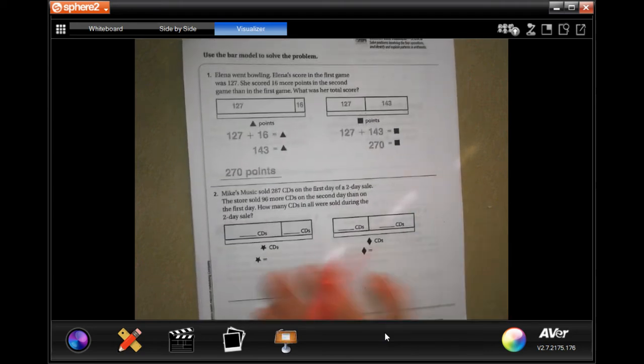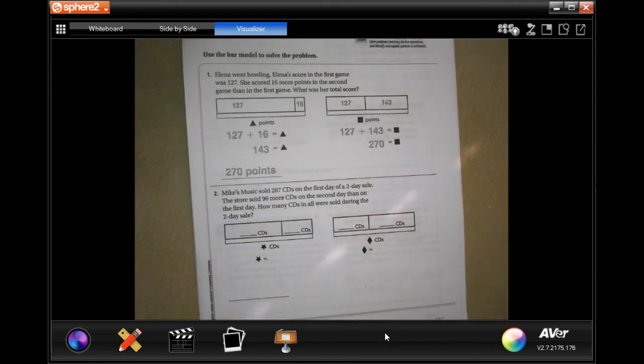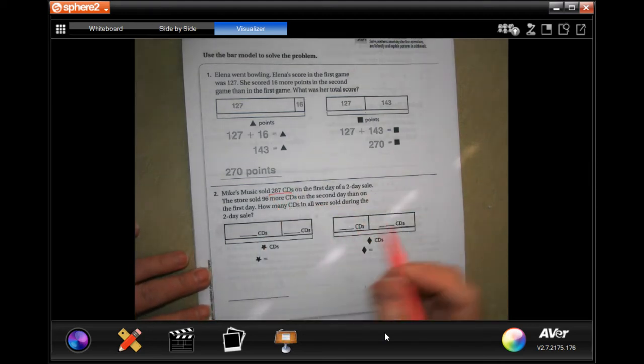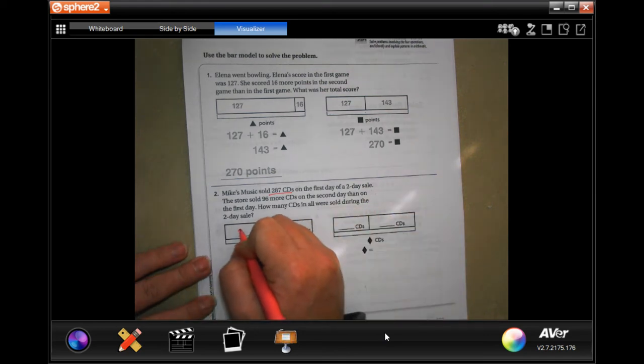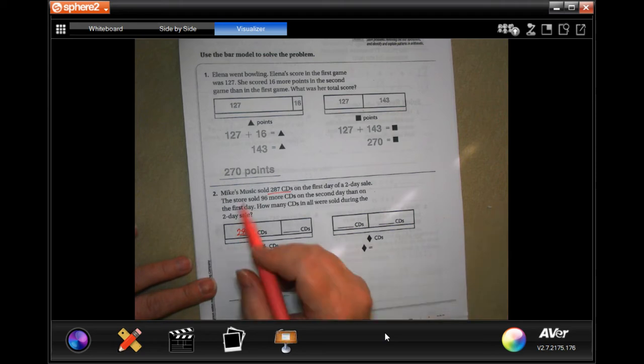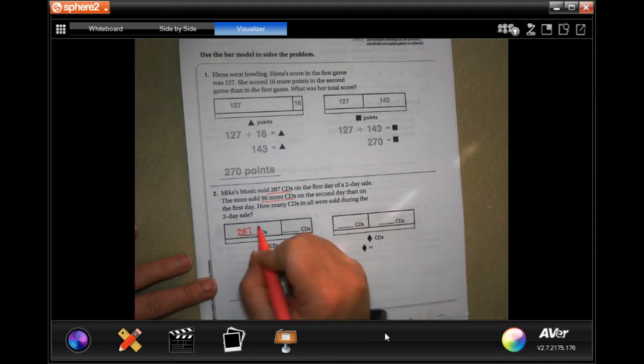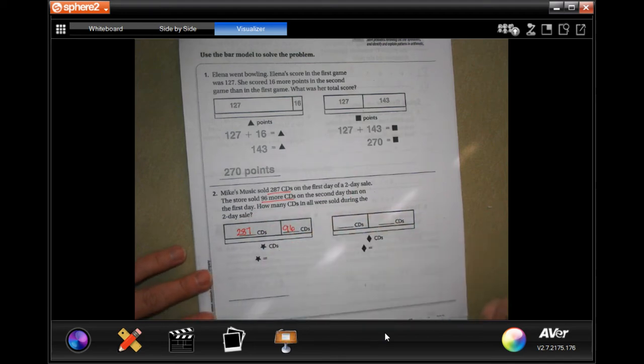Number 2 is a two-part problem. Nice Music sold 287 CDs on the first day of a two-day sale. So, 287 is going to be our first number. The store sold 96 more CDs on the second day than on the first. So, we are going to add that 96 more CDs.